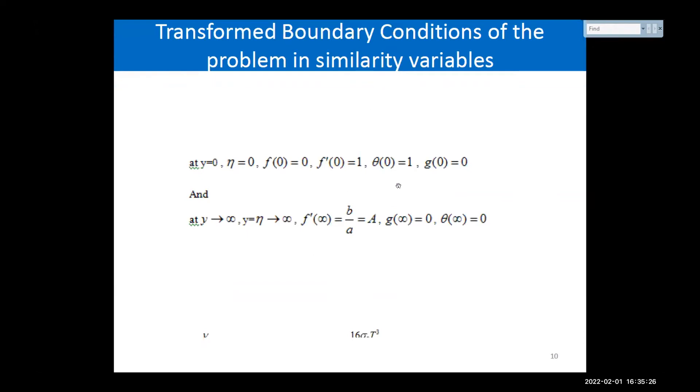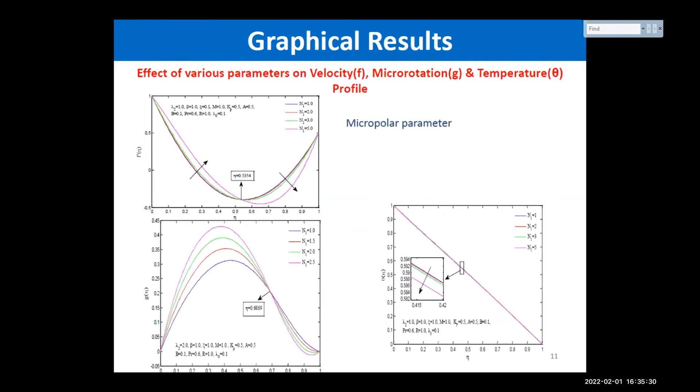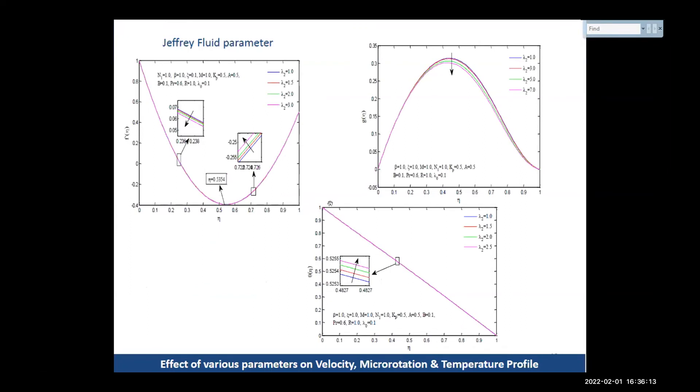These are the transformed boundary conditions. Actually, I'm not going into the detail just because of short of time. I'm sorry for that. But quickly, I am presenting an overview of my work, a research paper on effect of various parameters on velocity, micro rotation, and temperature. All three graphs show by their nature how near the sheet, the Jeffrey fluid is in the solid form, and when we move away from this boundary, it comes to be in a fluid state.